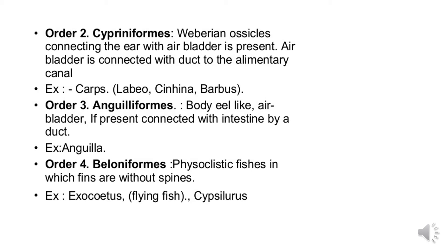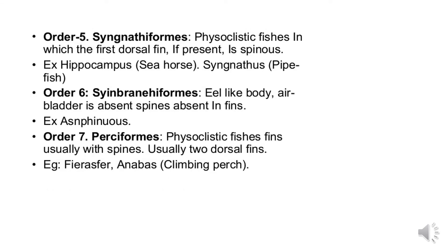Order 4 is Beloniformes: physoclistous fishes in which fins are without spines. An example is Exocoetus (flying fishes) and Scyliorhinus. Order 5 is Syngnathiformes: physoclistous fishes in which the first dorsal fin is spinous. Examples are Hippocampus (seahorse) and Syngnathus (pipefish). Order 6 is Synbranchiformes: eel-like body with spiny fins absent.